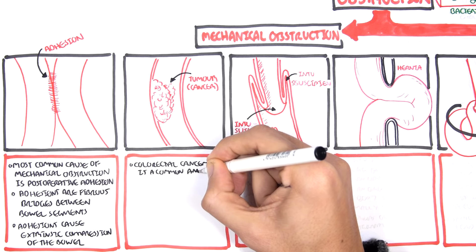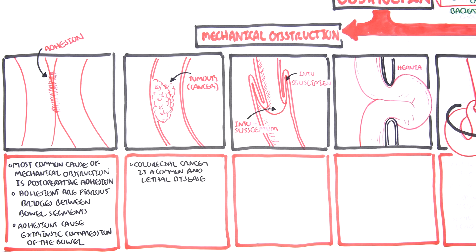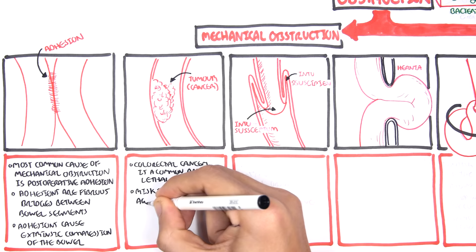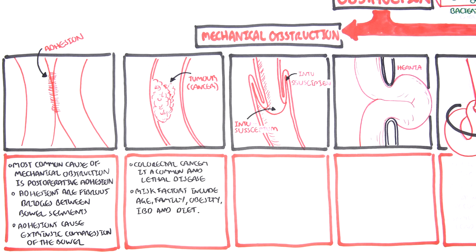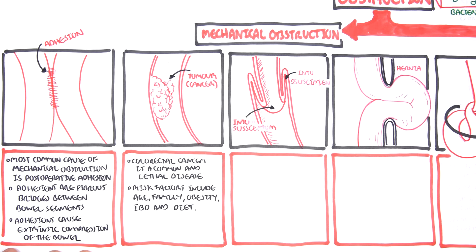Colorectal cancer is a common and lethal disease. Risk factors for cancer of the bowel include age, family history, obesity, inflammatory bowel disease, and certain diets. A tumor can grow so large that it causes an obstruction.